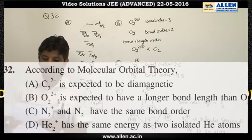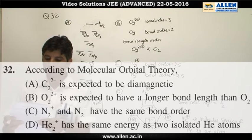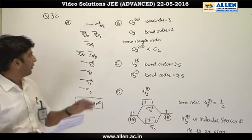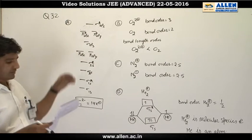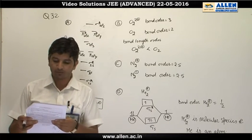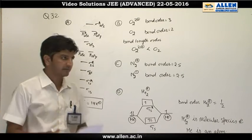Question No. 32. According to Molecular Orbital Theory, Option A: C₂²⁻ is expected to be diamagnetic.